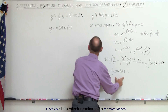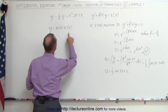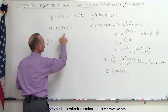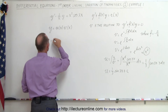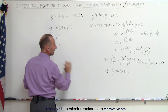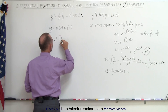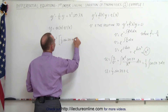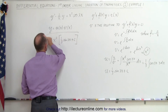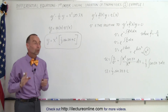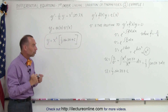Now we can plug that back in. Writing v first, y equals v times u, so y equals x squared times quantity 1 third times the sine of 3x plus a constant of integration. We can leave it like that, and that is the solution to this differential equation.